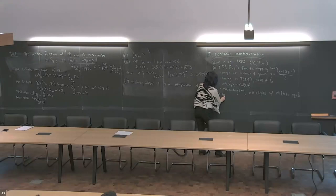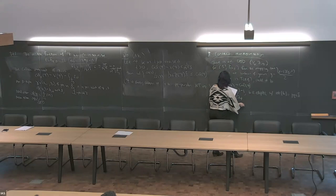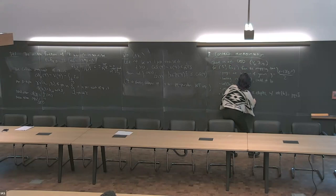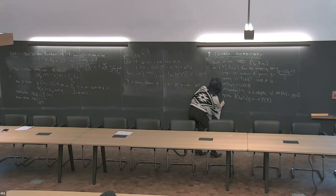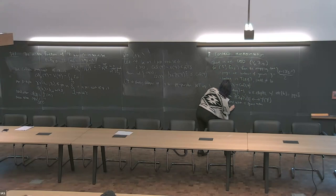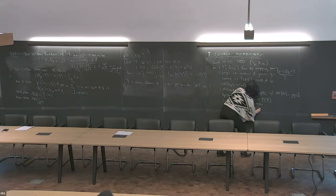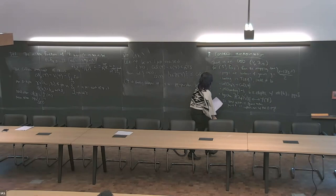There'll be a bijection between the periodic orbits of this open book minus the binding and the periodic points of the symplectomorphism ψ, so that the total action is the symplectic action and the period is the intersection with the zero page. That translates into a statement about linking with the binding.